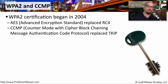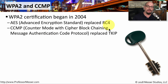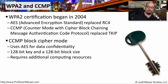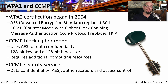WPA2 uses CCMP to encrypt the traffic going through our wireless networks. Instead of using RC4 as the encryption algorithm, WPA2 uses AES, or the Advanced Encryption Standard. CCMP stands for Counter Mode with Cipher Block Chaining Message Authentication Code Protocol, and that effectively replaced the TKIP that we had in WPA. CCMP's block cipher mode uses a 128-bit key and a 128-bit block size. Because WPA2 was using a more advanced encryption algorithm, there were additional resources required by our wireless devices, and many organizations had to upgrade their access points to take advantage of WPA2. But the features were well worth the upgrade — we have data confidentiality with AES encryption, authentication features, and access control built into the WPA2 protocol.